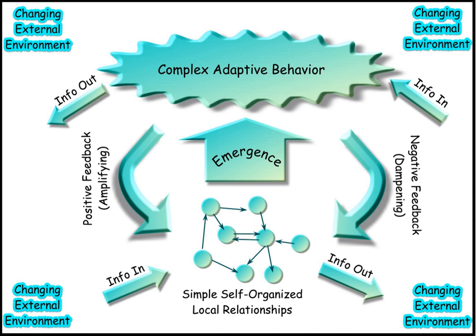Systems sciences are scientific disciplines partly based on systems thinking such as chaos theory, complex systems, control theory, cybernetics, sociotechnical systems theory, systems biology, systems psychology, systems chemistry, systems ecology, systems psychology and the already mentioned systems dynamics, systems engineering, and systems theory.